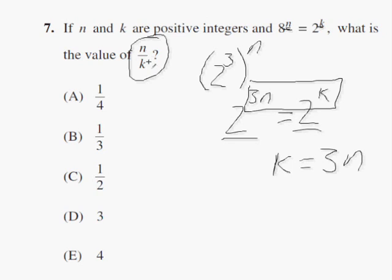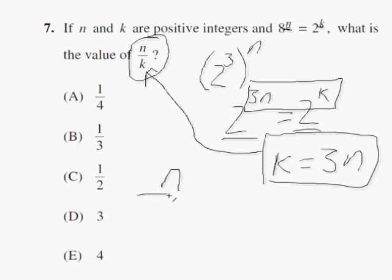So n over k is really, well, since k equals 3n, this is really n over 3n. The n's cancel, and this is really 1 over 3, or choice B.